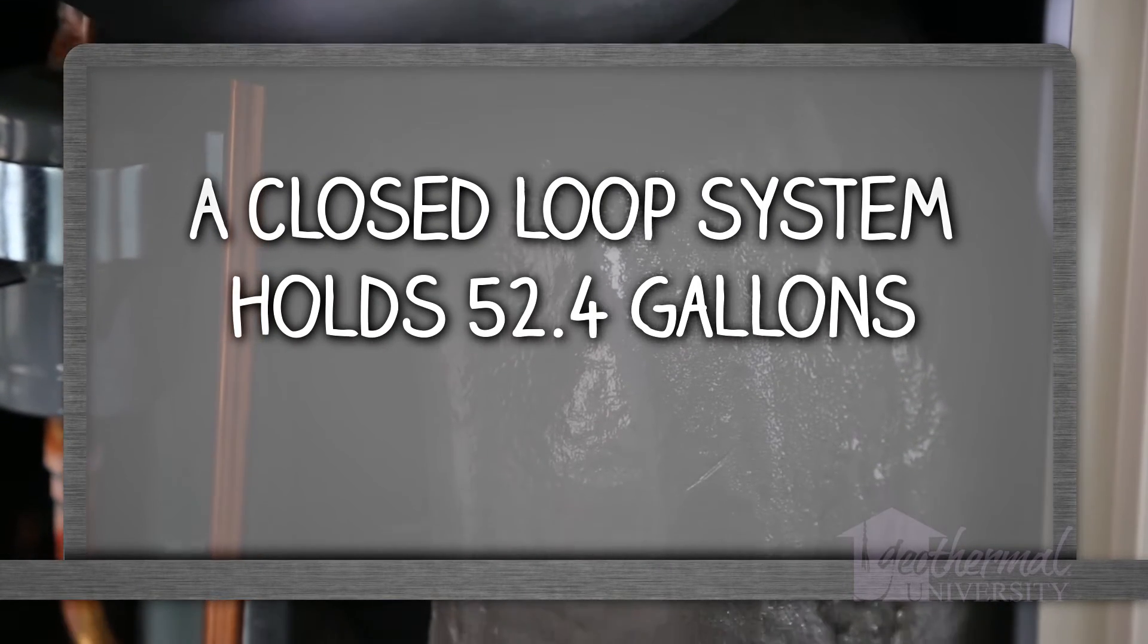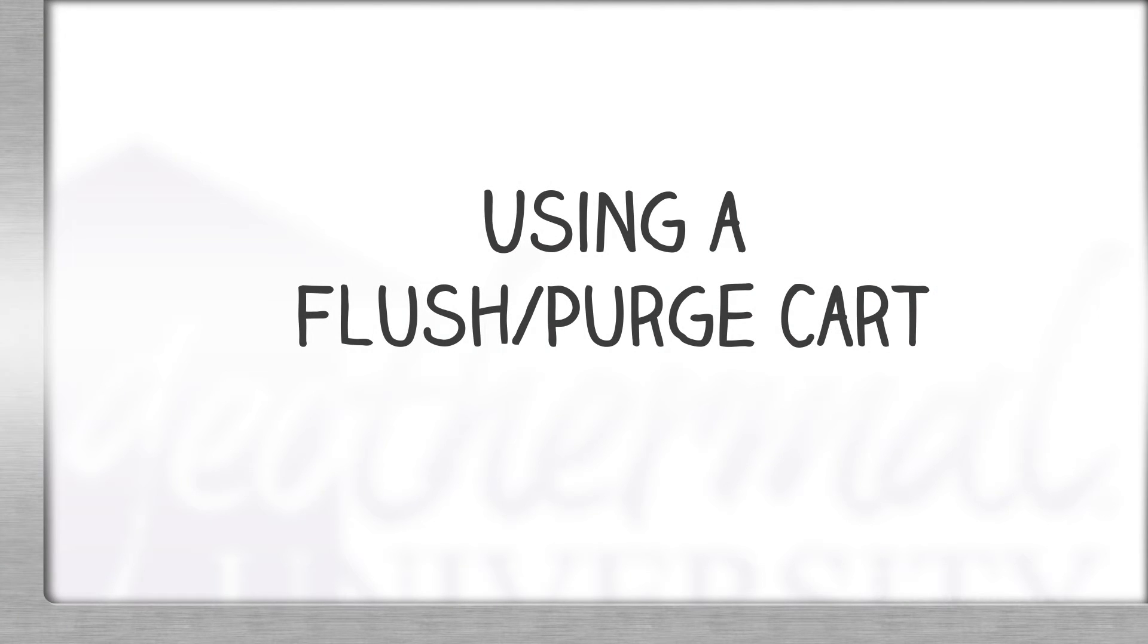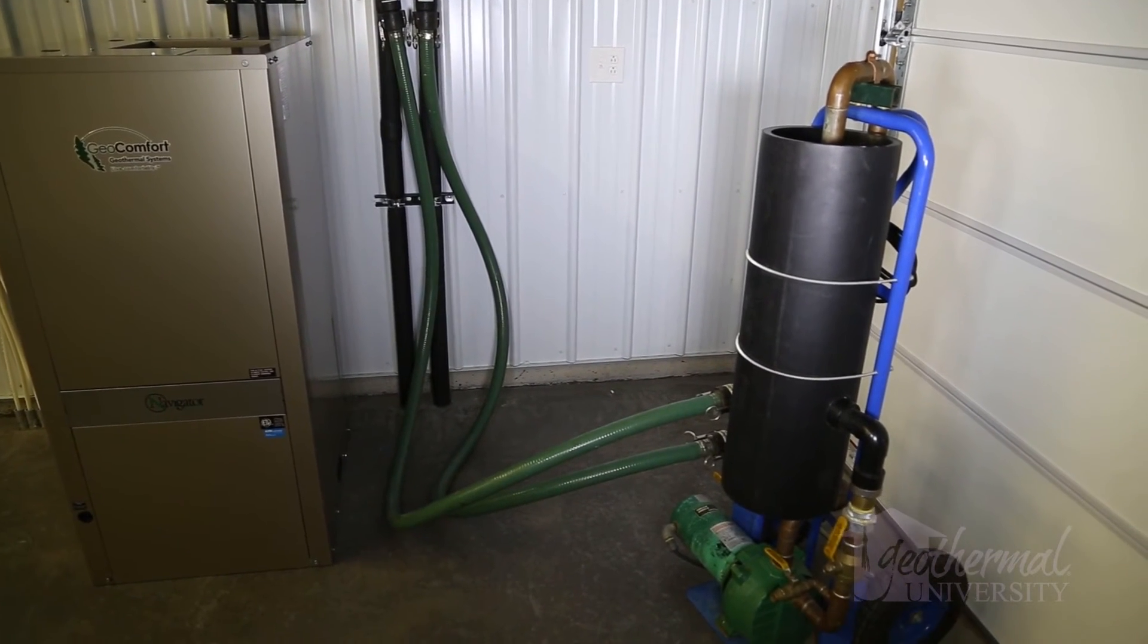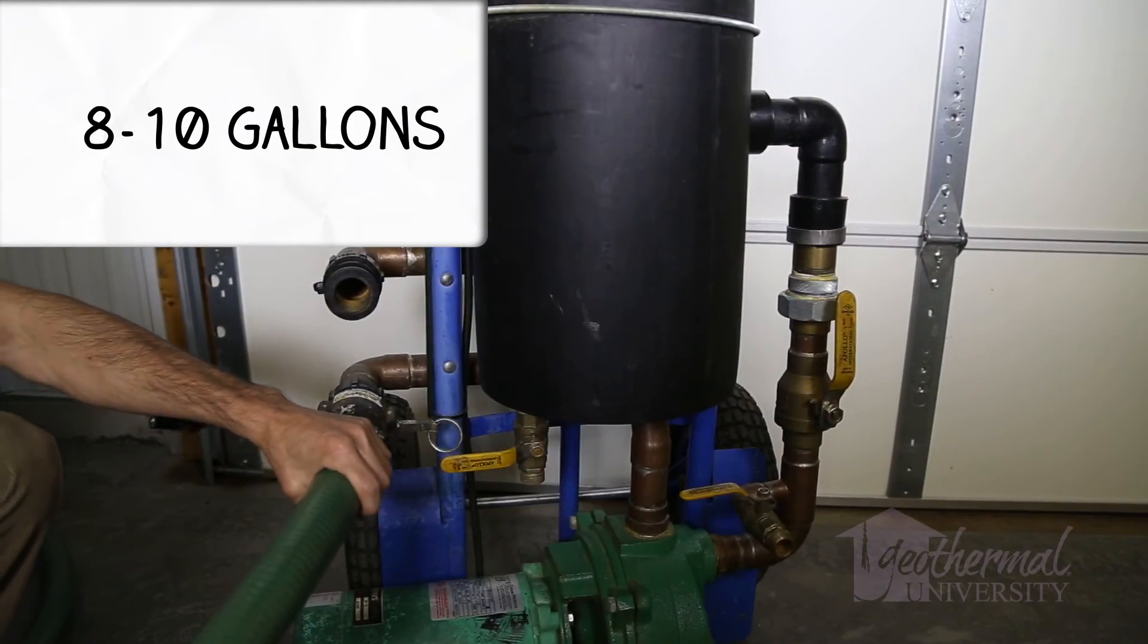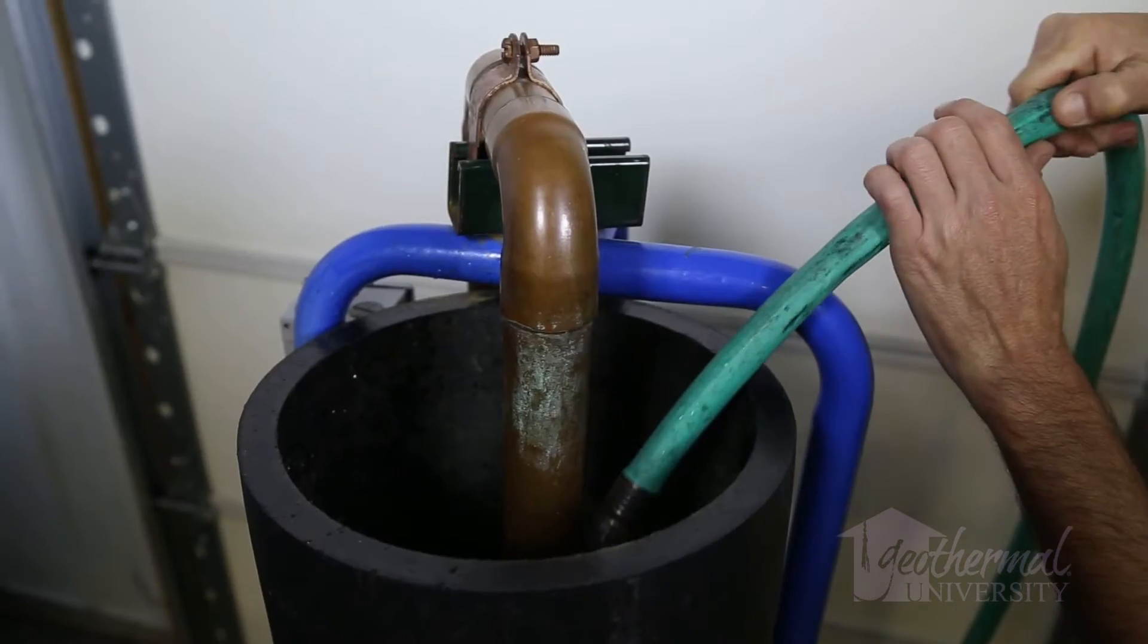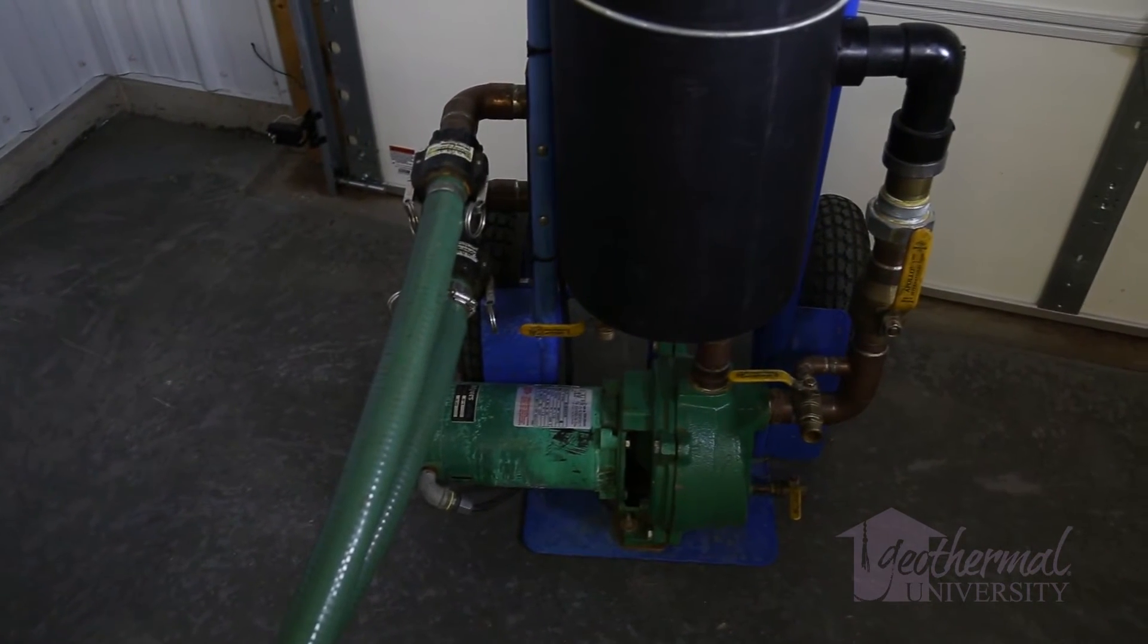Our geothermal closed-loop system holds 52.4 gallons. If you are going to use a flush purge cart, one last component may need to be added to our calculation. A typical flush cart holds about 8 to 10 gallons. To calculate the correct amount of antifreeze, the gallons in the flush cart must be included in our calculations and treated.